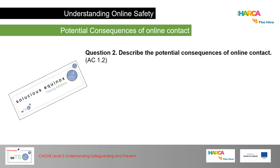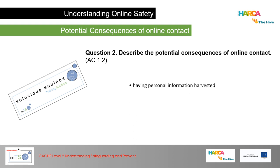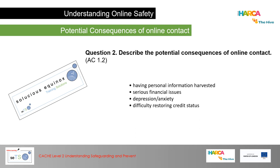Question 2 asks you to describe the potential consequences of online contact. Remember: having personal information harvested, serious financial issues, depression, anxiety, difficulty restoring credit status, bullying, harassment, stalking and grooming. And remember — don't just make a list. I want to see some detail about each of these points.